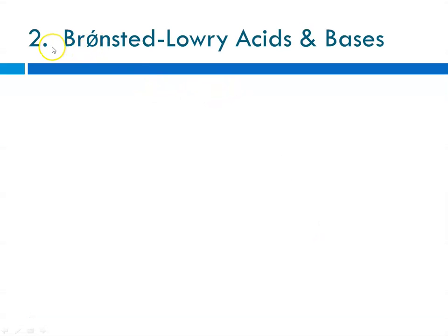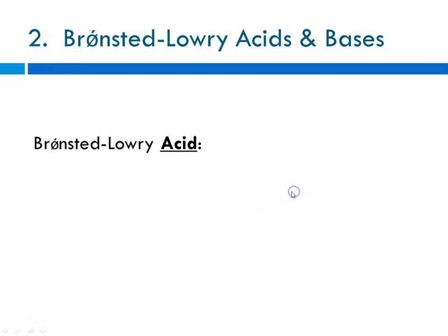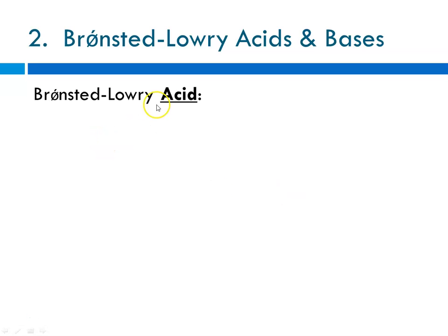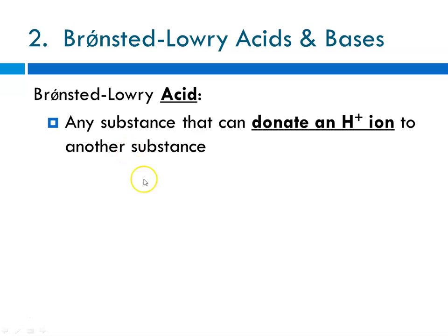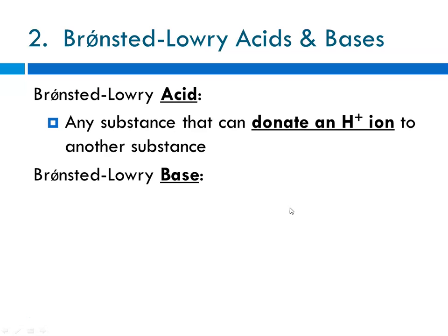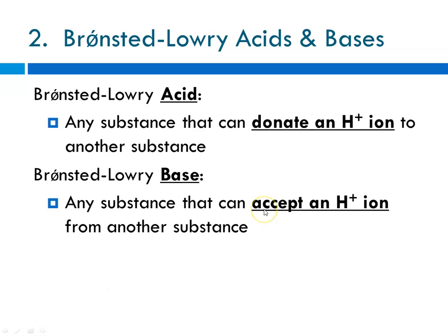We're going to start today with the second definition. Last time we talked about the first definition, which is the most narrow — the Arrhenius definition. Today we're going to talk about the Bronsted-Lowry definition of acids and bases. According to the Bronsted-Lowry definition, an acid is any substance that can donate an H-plus ion or a proton to another substance, and a base is any substance that can accept the H-plus ion or a proton from another substance. This definition is normally referred to as the proton donor, proton acceptor model of acids and bases.